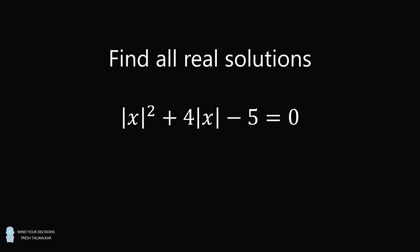Hey, this is Preshto-Walker. Find all real solutions to the equation: the square of the absolute value of x, plus 4 multiplied by the absolute value of x, minus 5, is equal to 0. Pause the video if you'd like to give this problem a try, and when you're ready, keep watching to learn how to solve this problem.